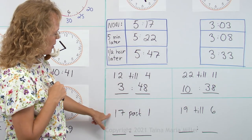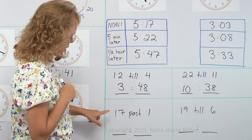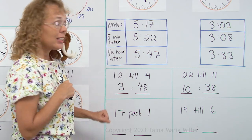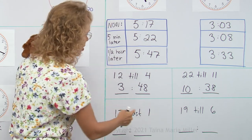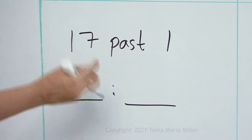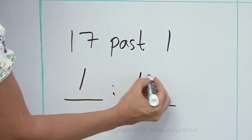17 past 1, this one is easier because it's not one of those till things, it's past. So it is one hour, and this tells you the minutes, 1, 17.